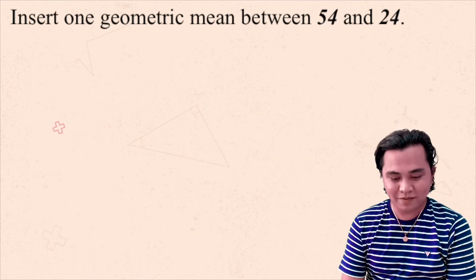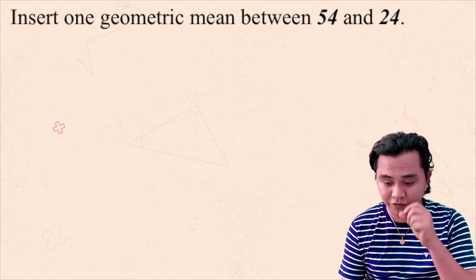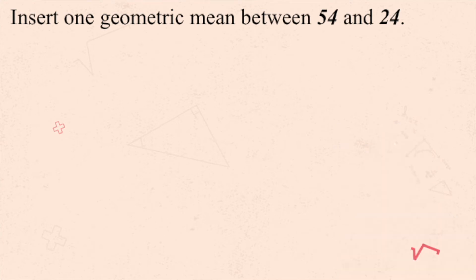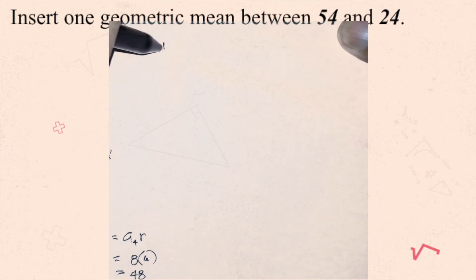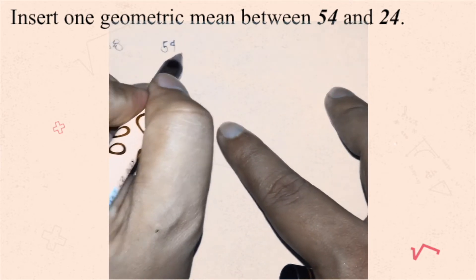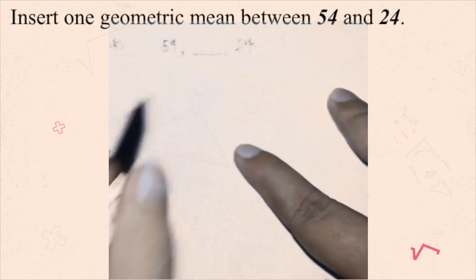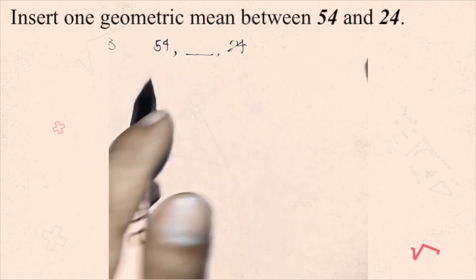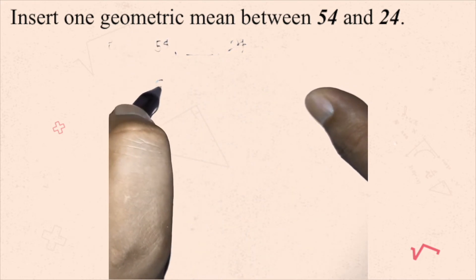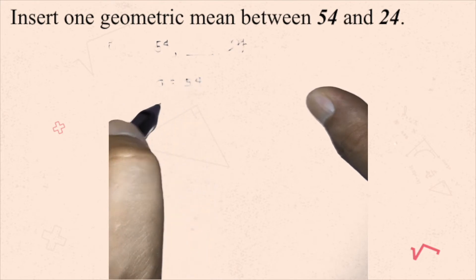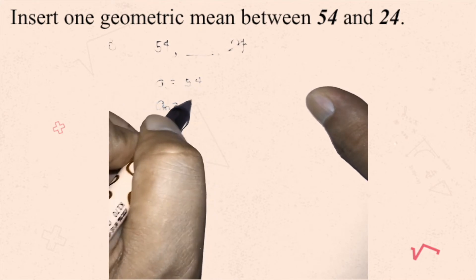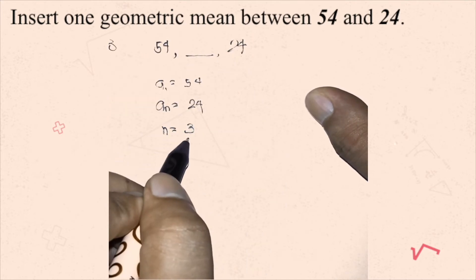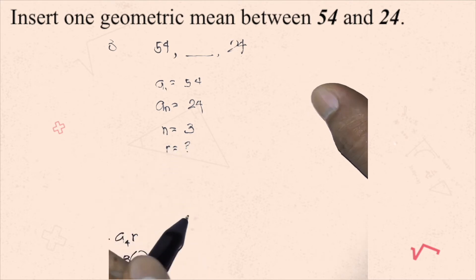Second example: insert one geometric mean between 54 and 24. Here, a sub 1 is 54, and a sub n is the last term, which is 24. That happens to be the third term of the sequence, so n must be 3. Let's find r.